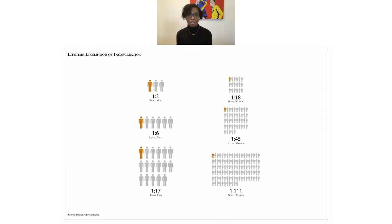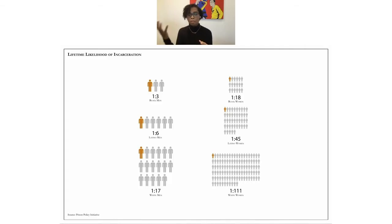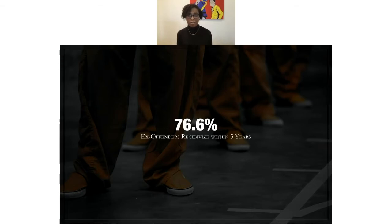You cannot talk about incarceration without linking it to race and ethnicity. There is a one in three lifetime likelihood of Black men being incarcerated, and one in 18 for Black women — notably, Black women are the fastest-growing incarcerated population. This has repercussions for family destabilization, ripping away mothers from children and from caring for elderly parents. This imbalance also affects Latinx men and women. With 76.6% of people recidivizing within five years, given the cost supposedly spent on rehabilitation, the system is not working — it is broken and functionally flawed.